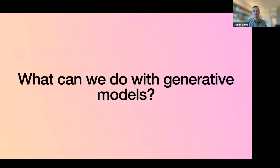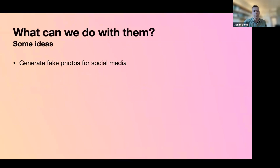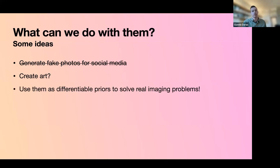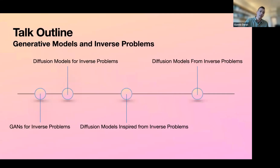So these models are really impressive — there's no doubt about that. But the real question is: what can we do with them? One idea is generating fake photos for social media, which many would argue is a bad idea. Another direction is creating art — there are people whose job title is 'artist using generative models.' But what we're really interested in is: can we use these models to solve real imaging problems? Someone spent millions of dollars training a powerful generator — can we use it for real problems? That's the theme of this talk.